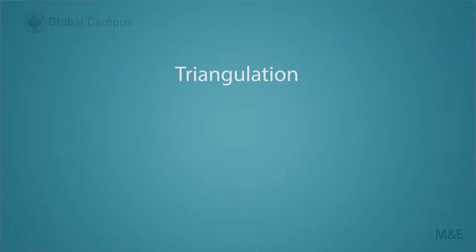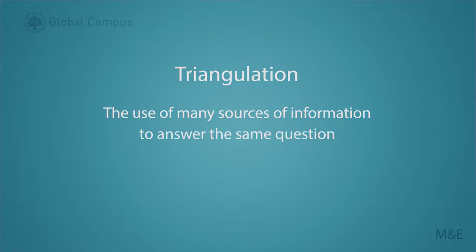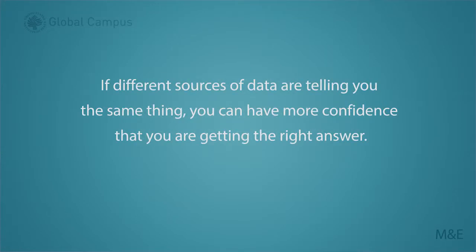Social science has a lot to tell us about how to make data collection and analysis more rigorous. I'll just mention one key concept now: triangulation. Triangulation is the use of many sources of information to answer the same question. If different sources of data are telling you the same thing, you'll have a lot more confidence that you're getting the right answer.